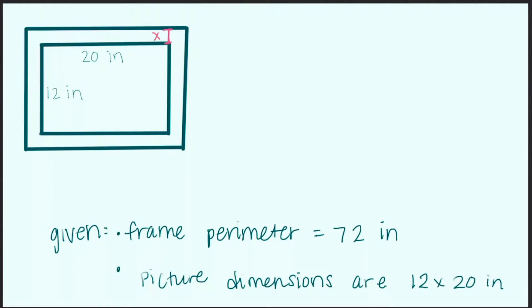First we need to set up an equation. We're given that the frame perimeter is 72 inches, and we know that the perimeter is, let's call this y and this z, would be 2y plus 2z. It's going to equal 72.